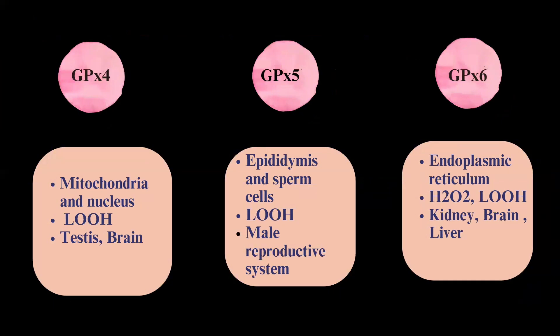Glutathione peroxidase 4 is located in the mitochondria and nucleus. Its substrate specificity is lipid hydroperoxide. It functions in protection of the cell from lipid hydroperoxide and in maintenance of sperm motility and fertility.